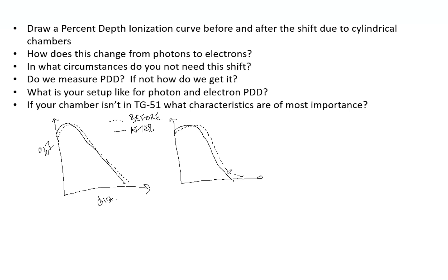So how does that change from photons to electrons? And let's also talk about why we need to shift before I actually jump. Might as well cover everything. So we shift because the cylindrical chambers need it due to the fact that there is forward scatter of electrons in high MV beams like we use for linear accelerators. So that makes the chamber appear to be measuring at a point upstream from the actual location.